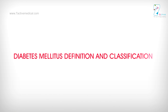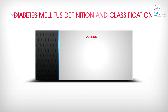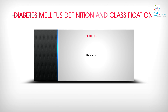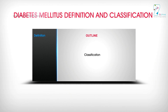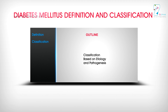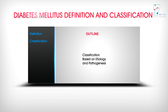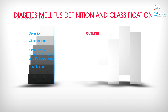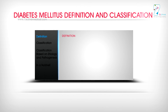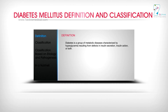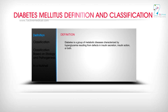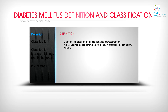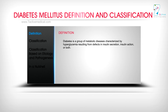Diabetes mellitus: definition and classification. Diabetes is a group of metabolic diseases characterized by hyperglycemia, resulting from defects in insulin secretion, insulin action, or both — as defined by the American Diabetes Association.